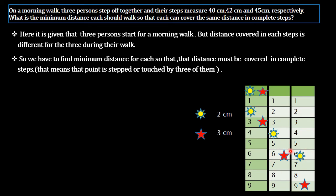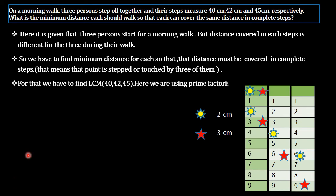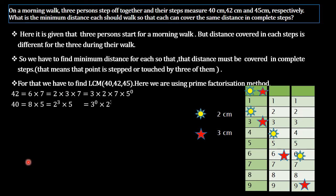So here what we have to do is find the LCM of the three step values to solve this problem. Using the prime factorization method: 42 equals 2 × 3 × 7; 40 equals 2³ × 5; and 45 equals 3² × 5.